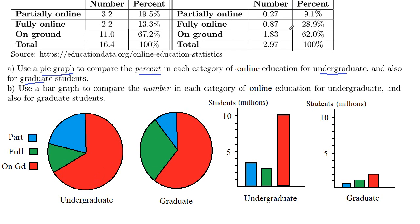For our graduate students, about 9% were partially online — that's this blue sector — and notice that that's smaller than the 13% over here. About 30%, almost a third, are fully online — that's the green right here, about a third of that circle. And then the remaining 62%, the red, is again more than half. Half would have been here — 50% of the circle — we've got more than that.